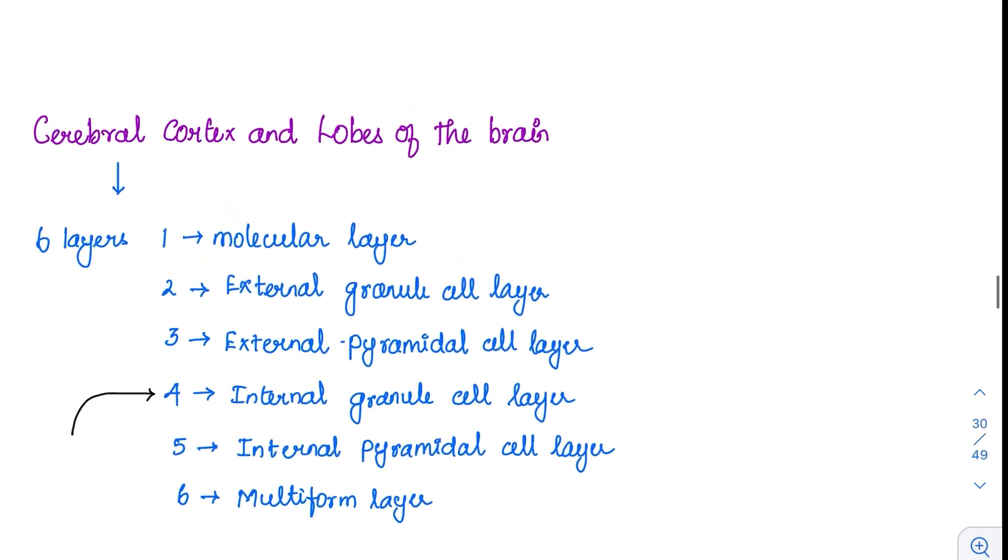So coming to the cerebral cortex, the cerebral cortex is made up of multiple layers. Especially it is made up of six layers: one, two, through six. Out of this, the first and the last layer, they both start with the letter M.